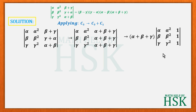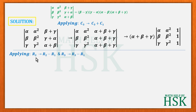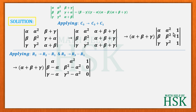Since all elements of column 3 are 1, we apply R2 → R2 − R1 and R3 → R3 − R1 to get zeros in column 3. This gives (α+β+γ) times the determinant with rows (α, α², 1), (β−α, β²−α², 0), (γ−α, γ²−α², 0).